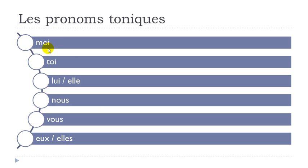So let's see them one more time: MOI, TOI, LUI, ELLE, NOUS, VOUS, EUX, ELLES.